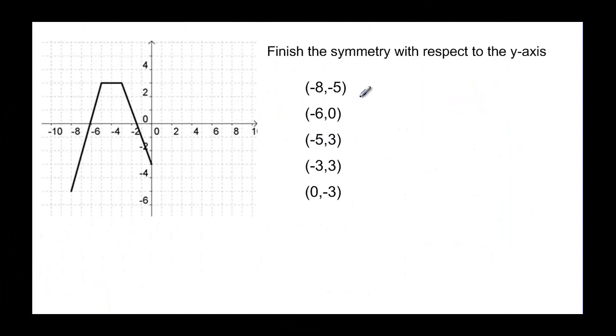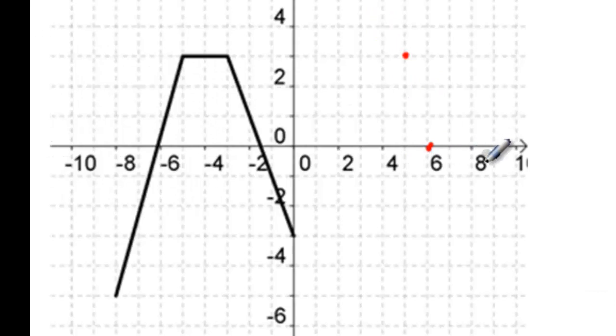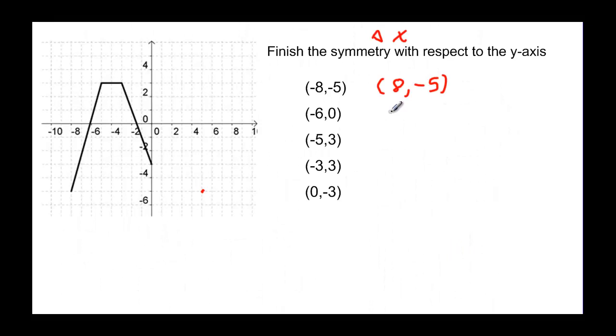Alright, so let's try and see if we can actually graph with respect to the y-axis. So that means, remember with the y-axis, that means it only changed the x's. So we have negative 8 will become positive 8, but I still have a negative 5. Positive 8 would be right here down to negative 5. Negative 6, 0 would be positive 6. I'm going to change the x, and 0 doesn't change sign anyway. So I'm going to have a positive 6, 0. And then we have negative 5, which becomes positive 5, but I still have a 3. So 5, 3.